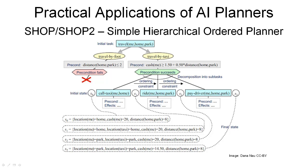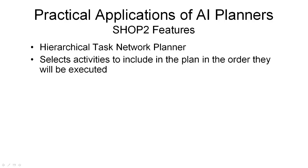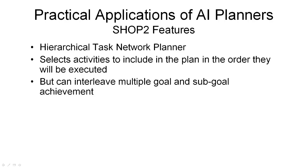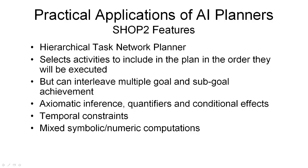SHOP and its successor SHOP2 were created at the University of Maryland by Dana Nau and his colleagues. SHOP2 is a hierarchical task network planner that keeps the activities in the plan fully ordered. It selects activities to include in the order that will be executed from the start of the plan, which eases reasoning about the state of the world affected by the plan at any point. SHOP2 does allow for interleaving of solutions for multiple goals and sub-goals in this ordered plan, which was an improvement over the original SHOP planner. It can reason with a rich logical model of the state, including quantifiers and conditionals, and can maintain and reason about temporal constraints as required for most practical planners.